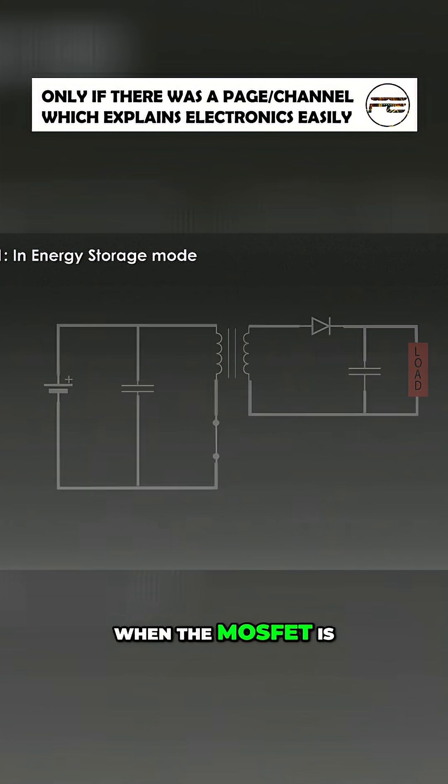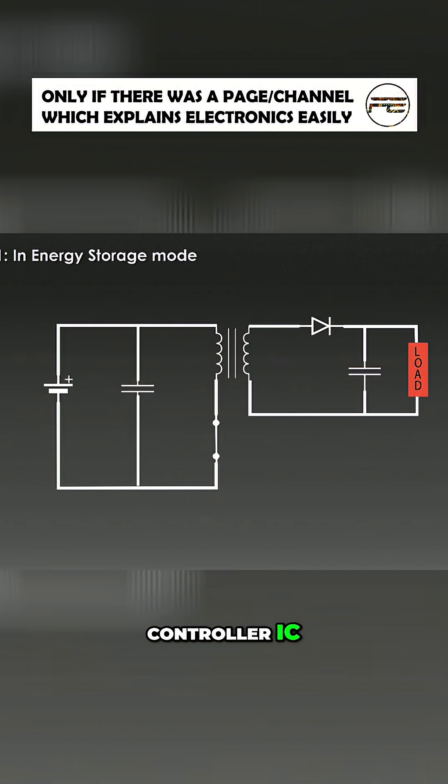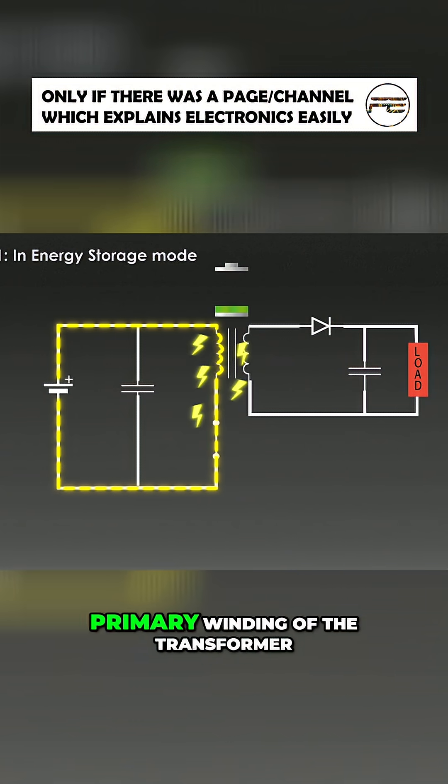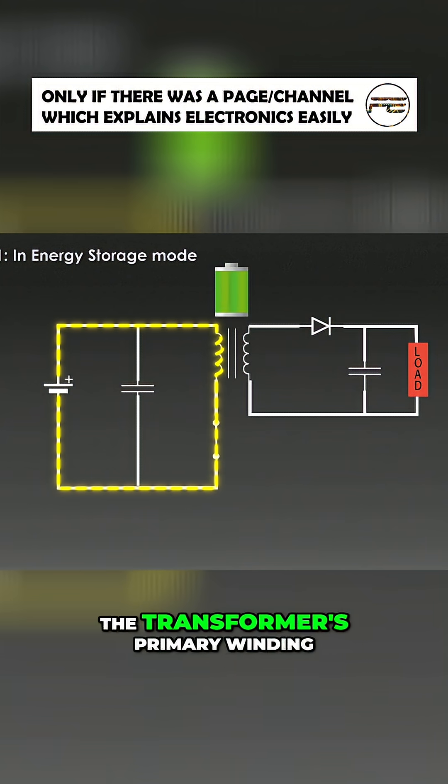In energy storage mode, when the MOSFET is turned on by the controller IC, current flows to the primary winding of the transformer. The transformer's primary winding stores energy in the form of a magnetic field.